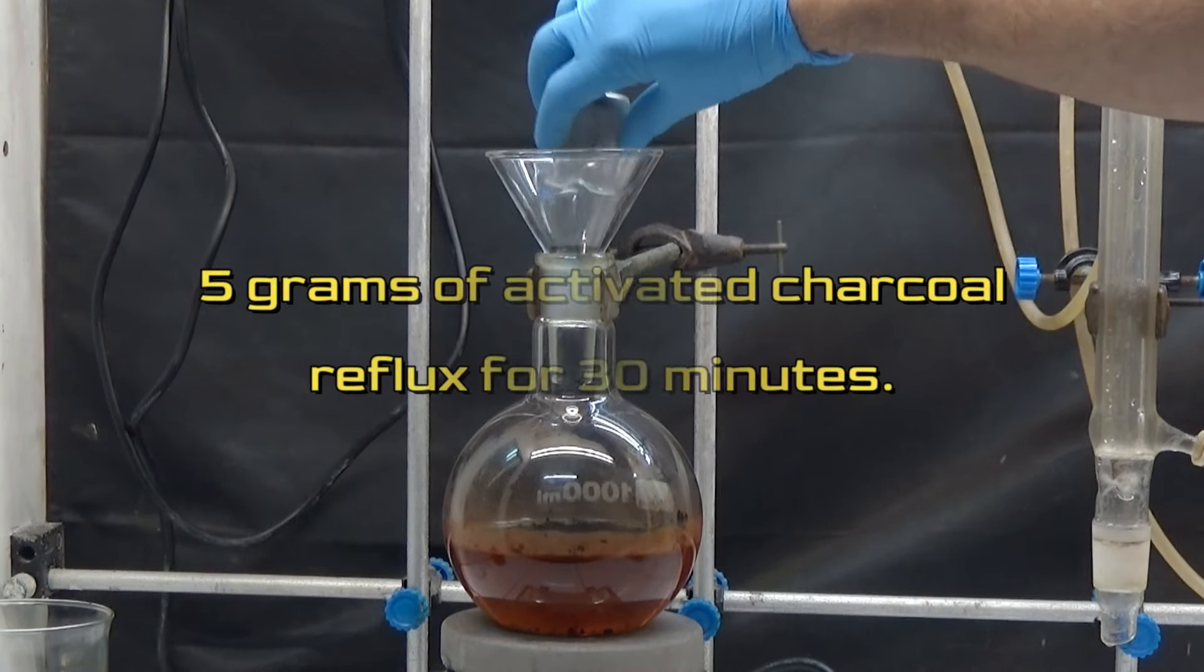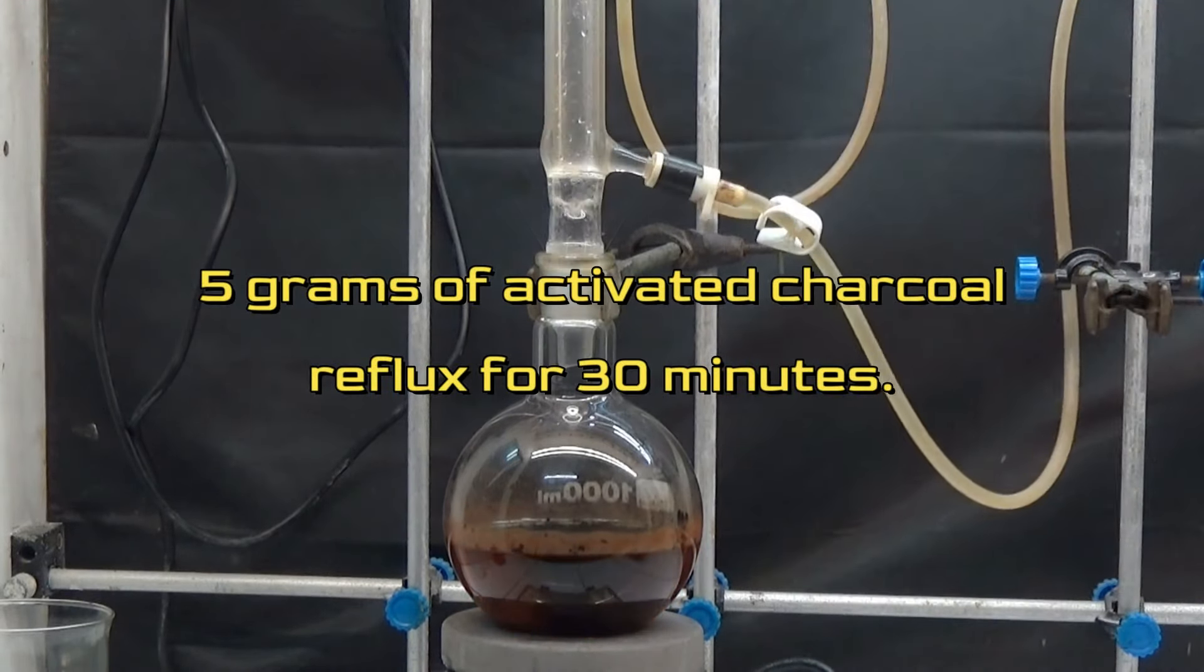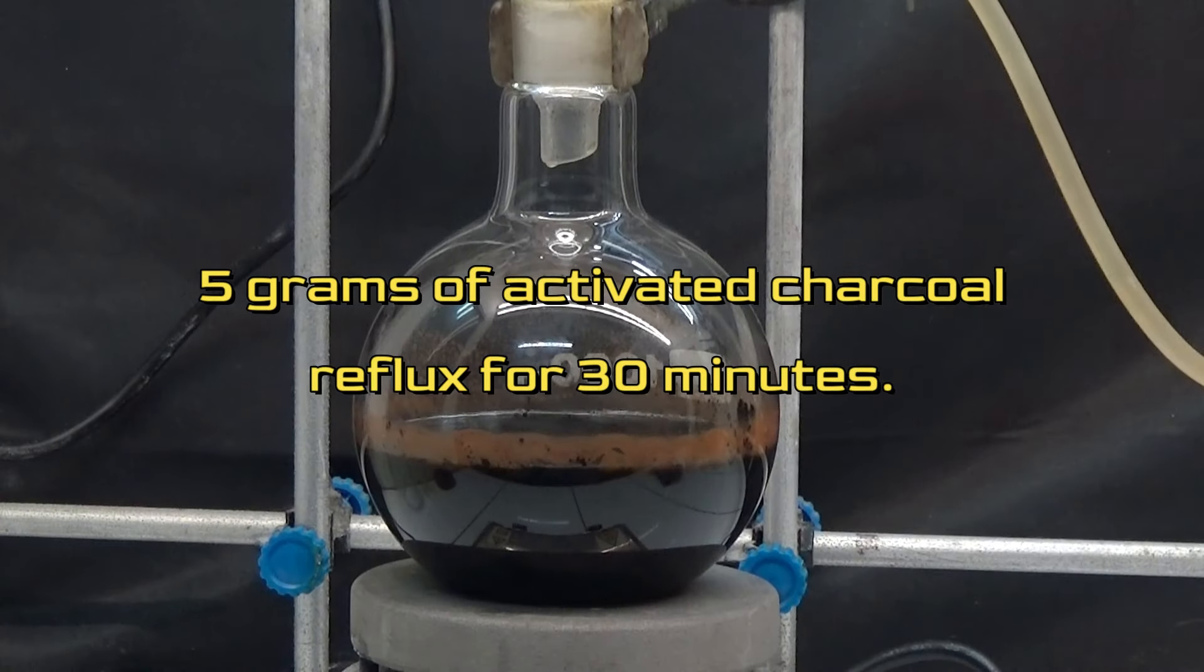To eliminate resins and discolor the obtained product, we add 5 grams of activated charcoal and heat it at reflux for 30 minutes.